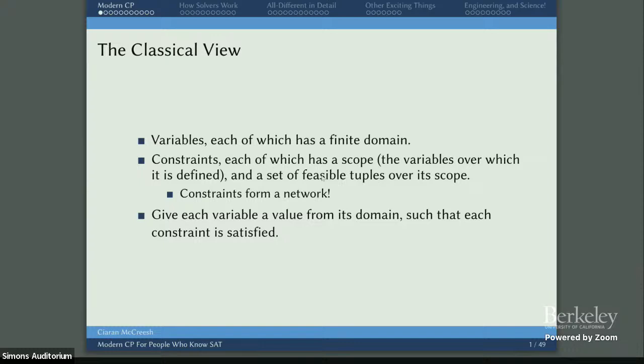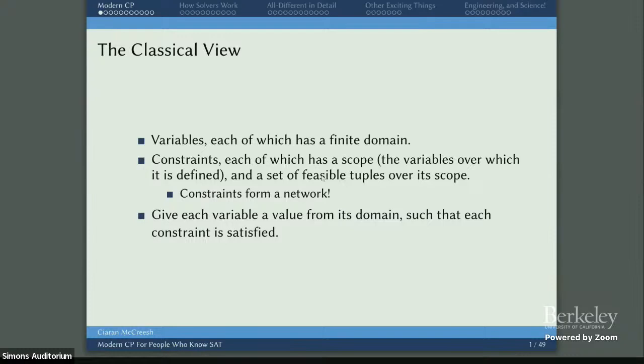Since this is a workshop about theory and practice, I should start with the way that theoreticians like to view constraint satisfaction problems. They will tell you that you have some variables, every variable has a finite domain, you have some constraints each of which has a scope — the variables over which it's defined — and a set of feasible tuples over this scope. All constraints form a network, and the idea is to give every variable a value from its domain such that each constraint is satisfied.